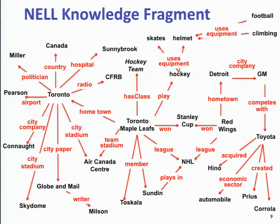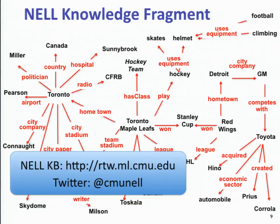Here is a fragment of the NELL knowledge graph, automatically extracted by reading documents. The nodes are entities: Toronto Maple Leafs play hockey, their hometown is Toronto, they won the Stanley Cup. Errors have been carefully removed from this particular graph, but understand there are errors and the system is about 80–85% correct based on random sampling. The whole knowledge graph is dumped every five iterations or so and made available for download, along with lots of metadata used for the extractions.